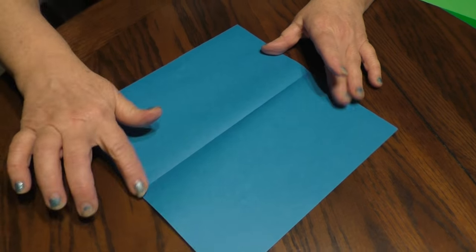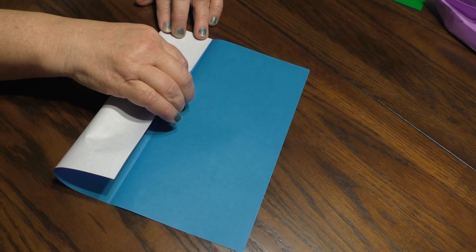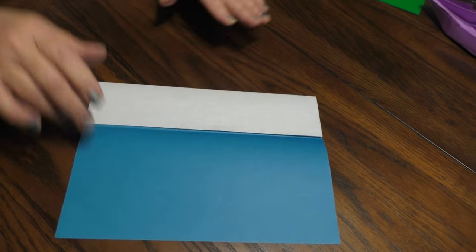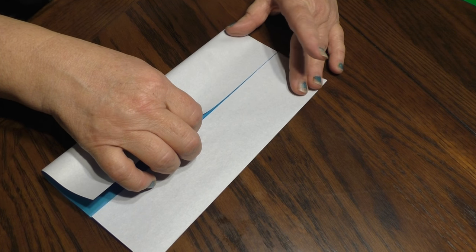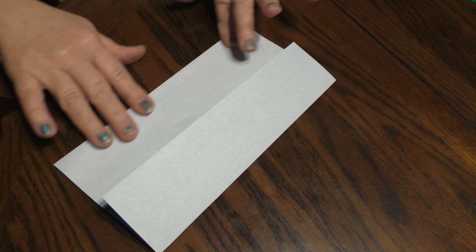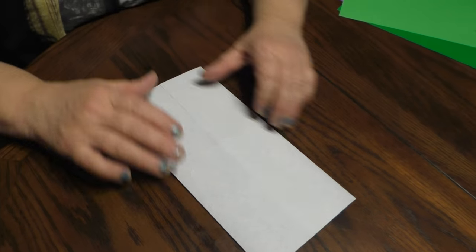You see that crease fold? You're going to line your paper right up to that crease fold to make a cabinet door, or a cupboard door, what they call it. Once you have that...